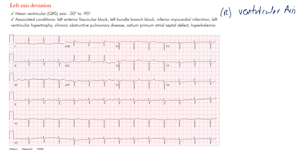Everything has an axis — there's a P wave axis, an ST segment axis, a T wave axis — but when you hear 'axis,' we tend to talk about the R axis or ventricular axis, and it tends to be in the frontal plane. Because it's in the frontal plane, we use the limb leads.